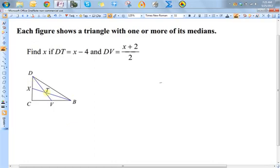Here I have a triangle with two of its medians represented, which means that I know that this point here, where the two medians intersect, is the centroid. So I'm trying to find the value of x when I know that DT, which is this segment here, and DV, which is the length of this median here, are represented by these two expressions.